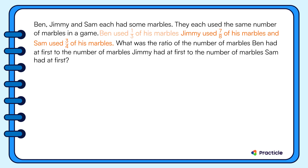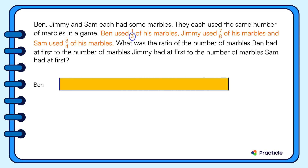Ben used one-third of his marbles. Let's draw that first. This fraction has a denominator of three, so if we draw a bar to represent all of Ben's marbles, we can divide it into three equal units. How many of these units did Ben use? Let's look at the numerator — Ben used one unit.